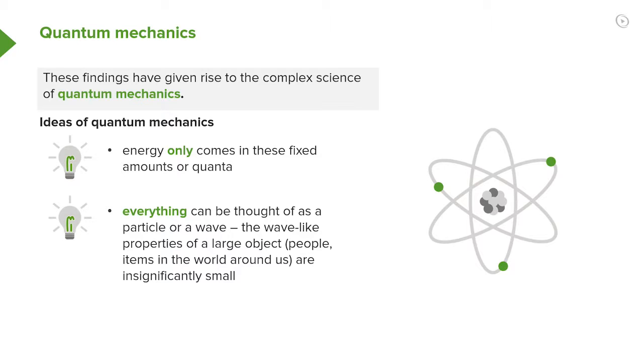The other part of it, which relates specifically to electrons, is that everything can be thought of as either a particle or a wave. The wave-like properties of a large object, for example, people and items in the world around us, are very, very small.